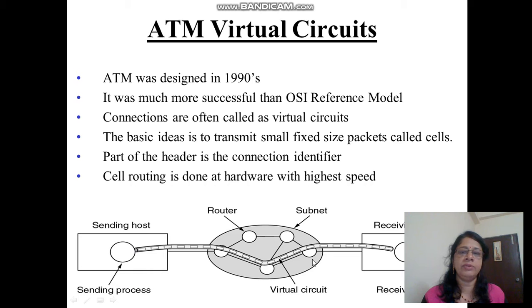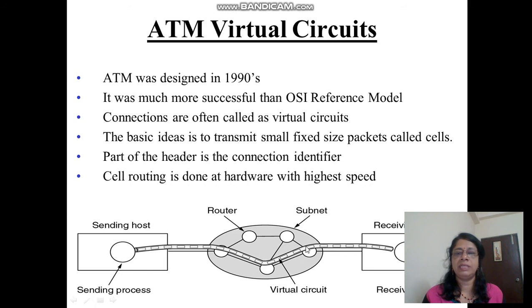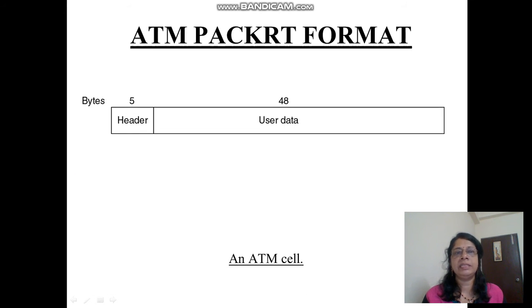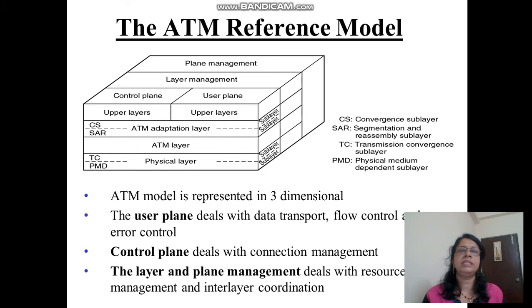Here is an example: on the left is the sending host, on the right is the receiving host, with the network — routers — in between. Before communication starts, a virtual path is established, and on top of that virtual path the message is transmitted. The message is converted into a number of packets, all of constant size: 53 bytes total, with 48 bytes for user data and 5 bytes for the header.